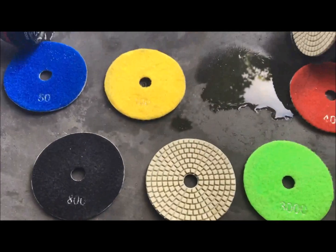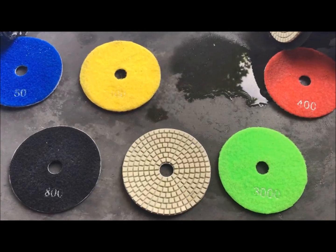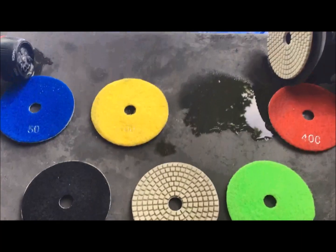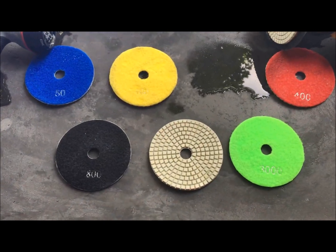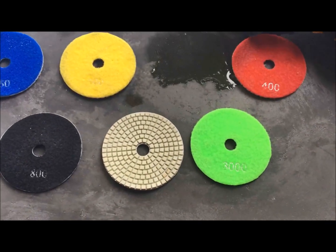I typically go to 800 because what that does is it gives me a nice smooth finish, but it also gives enough grit in the material that the clear coat will stick to. Sometimes if you get up to 3000, the finished coat won't stick and it'll start chipping off.